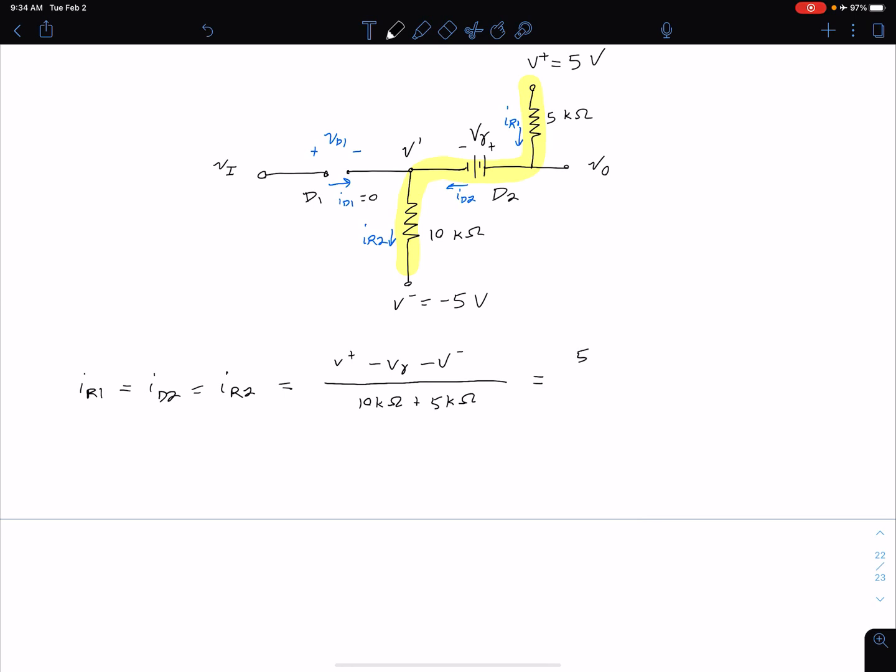Plugging in the values we have 5 minus 0.7 minus negative 5 divided by 15k ohms and we get that all of those currents, but the one we're interested in is I_D2, are equal to 0.62 milliamps.